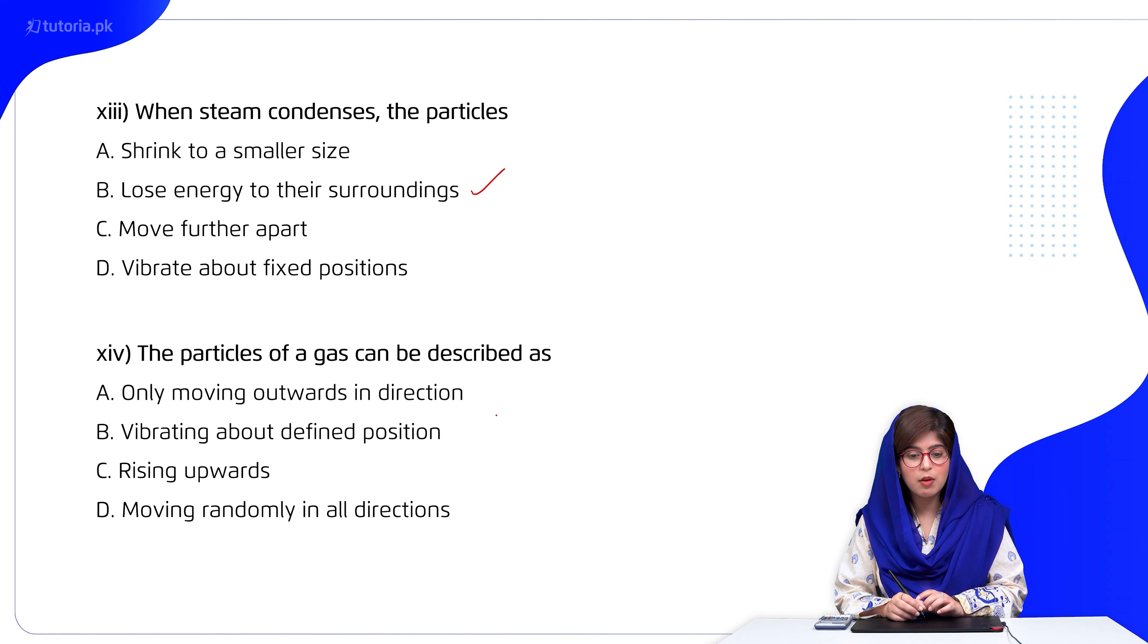Next, the particles of a gas can be described as: A only moving outwards in direction, B vibrating about defined position, C rising upward, D moving randomly. So students, we have discussed that gas molecules have haphazard movement.